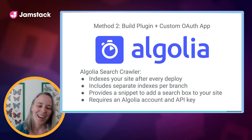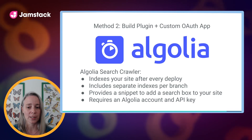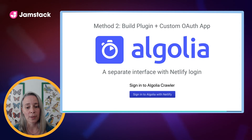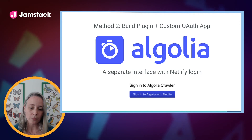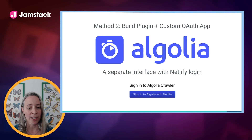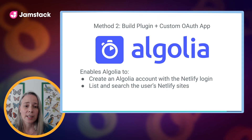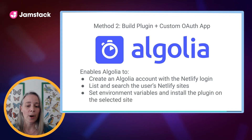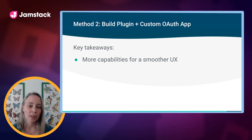But this also requires an Algolia account and an API key. Instead of requiring the user to go to Algolia and find the API token, Algolia has used a different method. They've created a custom OAuth app. Within their docs or their logs, they send users to a separate interface that they've created with a Netlify login — an OAuth2 login, much like login with GitHub or login with Google. Once the user logs in with their Netlify account, this enables Algolia to create an account on Algolia using the Netlify login, then list and search the user's Netlify sites so the user can choose which site they'd like to install the plugin on, and then Algolia can set the environment variables and install the plugin.